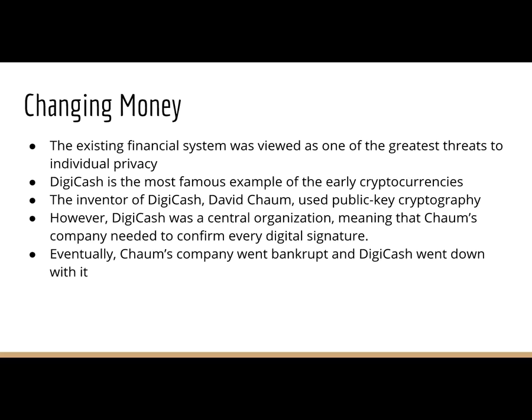However, there's one very big issue with DigiCash: it was a central organization. The entire currency was centralized around David Chaum and his company. The problem was that when DigiCash the company failed, DigiCash the currency failed as well. Libertarians and crypto anarchists of this time learned from this mistake, and after that they began to experiment with decentralized currency. This is a very important step in the development of what would become Bitcoin.